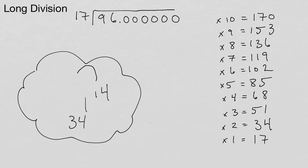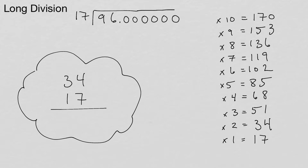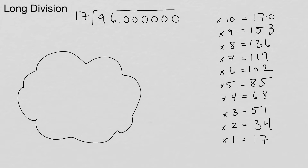For 17 times 3, just add 34 and 17 together. 4 and 7 gives us 11, write a 1 and carry a 1. In Vedic math we use a little dot for the carry. 1 and 3 is 4, and 4 and 1 is 5, so we get 51. For 17 times 4, double 17 times 2, which is 34 doubled: 3 doubled is 6, 4 doubled is 8, no carryover — answer is 68.